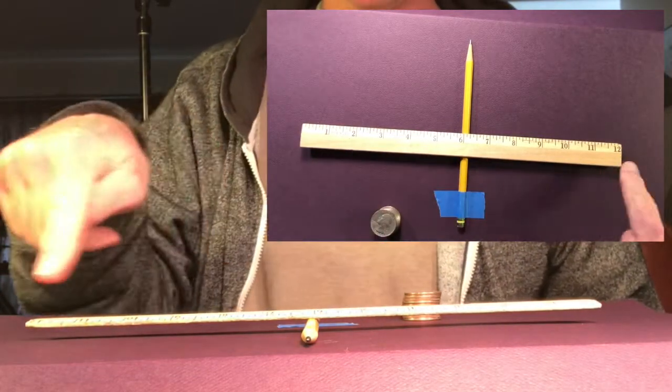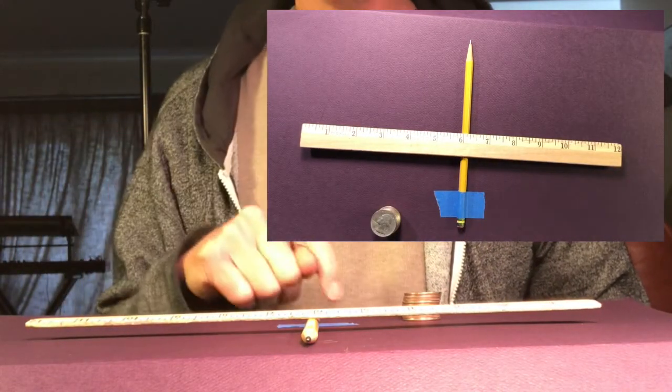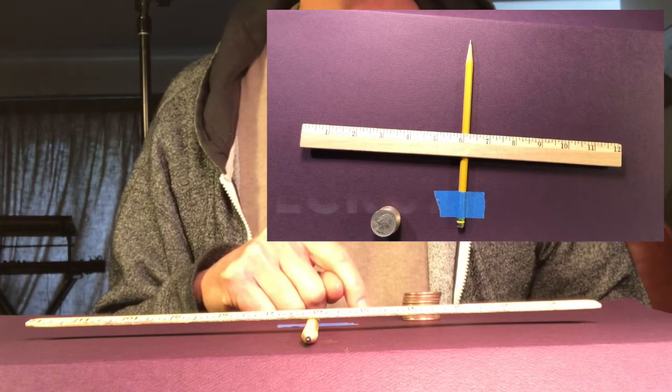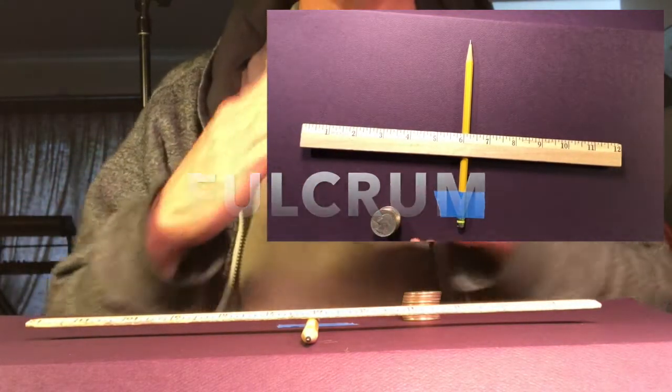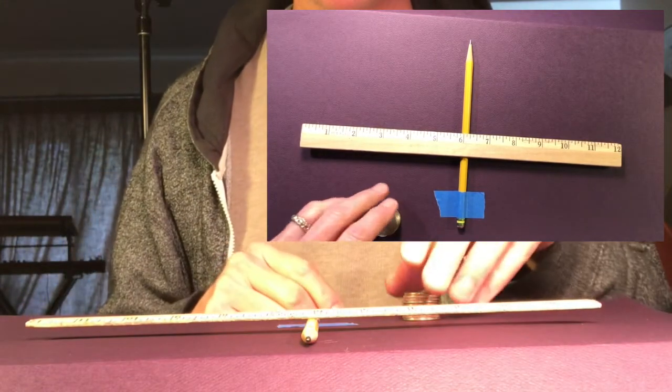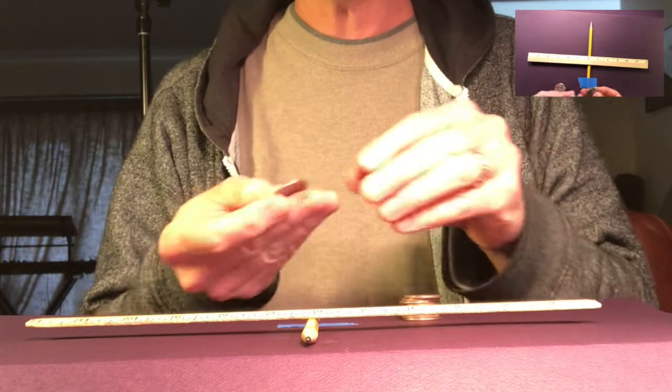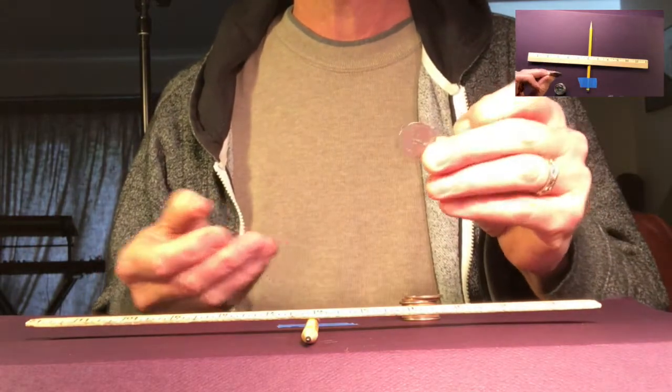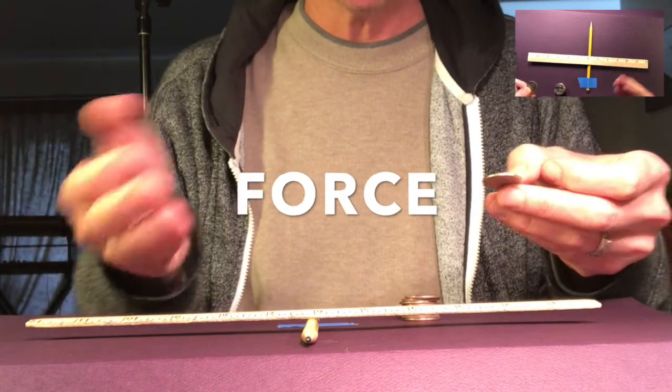I'm not going to call it a ruler anymore. I'm going to call it the lever. And I'm not going to call the pencil a pencil anymore. I'm going to call it our fulcrum. Okay, so the lever is balanced on the fulcrum and I'm going to put these quarters on. Now the quarters, what they do because of gravity is they push down with force. So they're going to be our force.